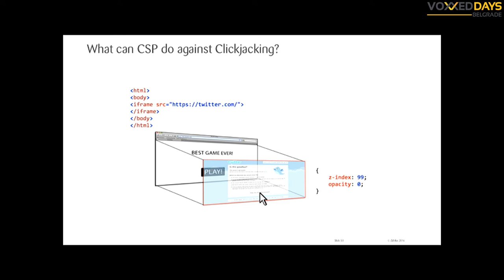Another thing CSP can mitigate is clickjacking. Clickjacking is when an attacker frames your website — for example Twitter — and you have the impression you're clicking on a website, but by playing with CSS z-index, layer ordering, and opacity, the attacker can hijack your clicks and do whatever they want on the other website.